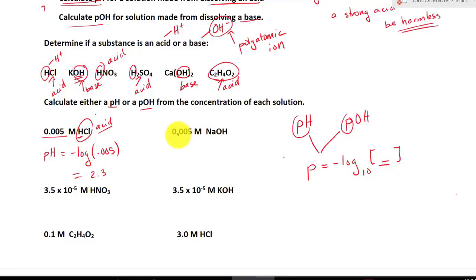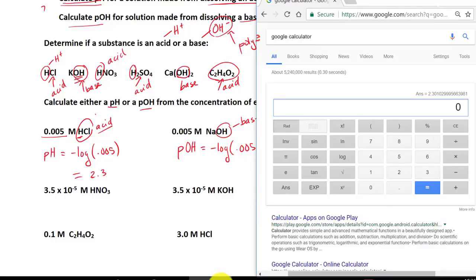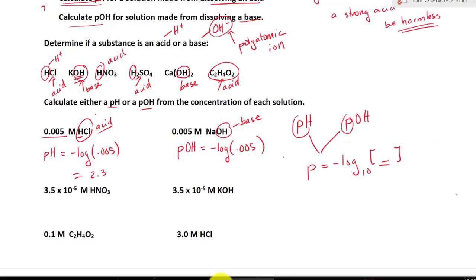Let's try another one: we have 0.005 molarity of NaOH. The OH tells us this must be a base, so we have to calculate pOH. We take negative log of 0.005, which gives us pOH equal to 2.3. However, pOH of 2.3 is not the same thing as pH of 2.3 — they are completely different.